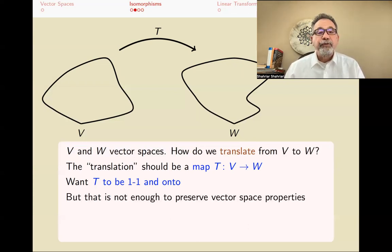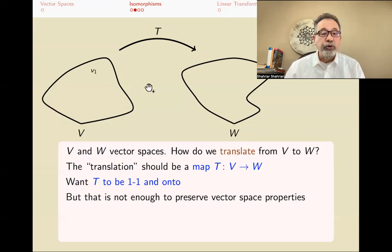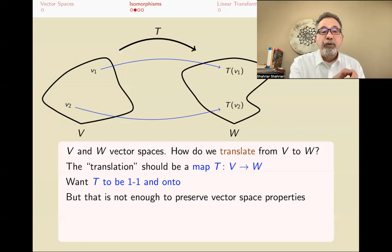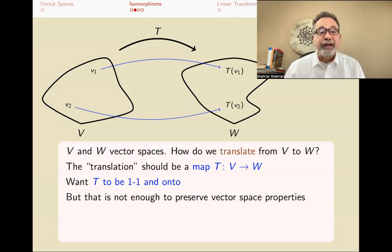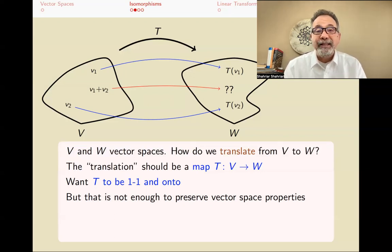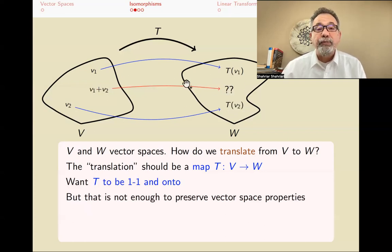But one-to-one and onto alone is not enough — it says nothing about how things add or how scalar multiplication works; it just says V and W have the same cardinality. So what else do I want? Say I have vector V1 in V; it maps to T(V1) in W. There's another vector V2 in V mapping to T(V2) in W. Because the map is one-to-one and onto, distinct elements map to distinct elements. But in a vector space I can add V1 plus V2, and the question is: where does V1 + V2 go? It is not free to go anywhere — T(V1 + V2) should equal T(V1) + T(V2).